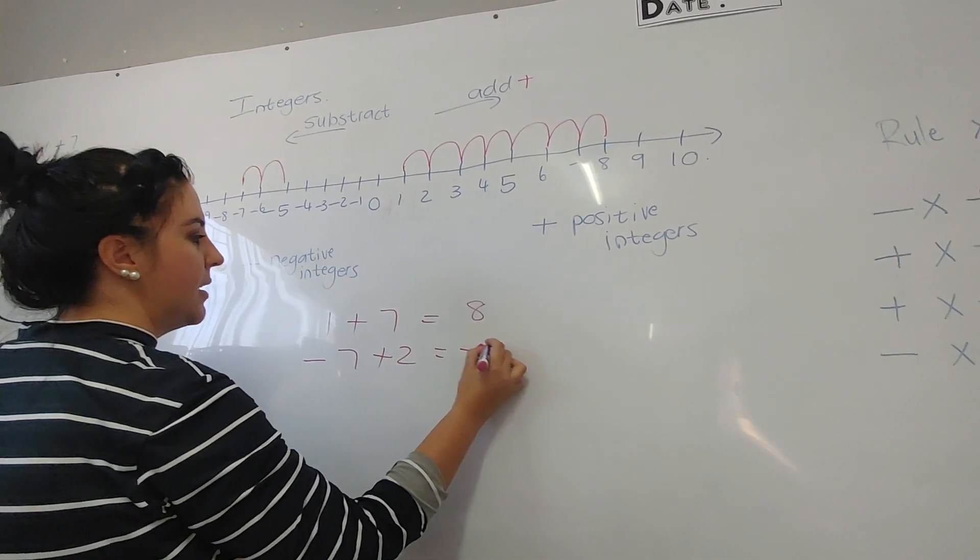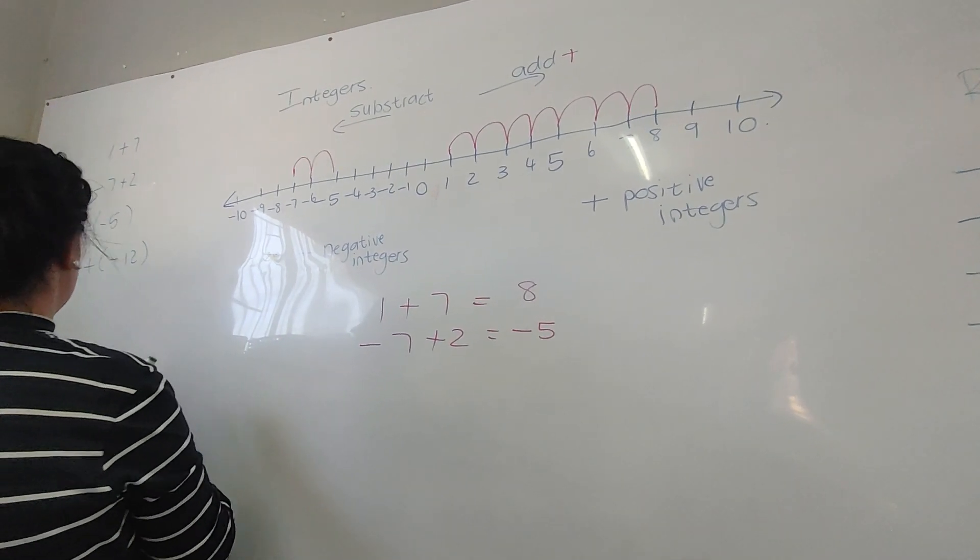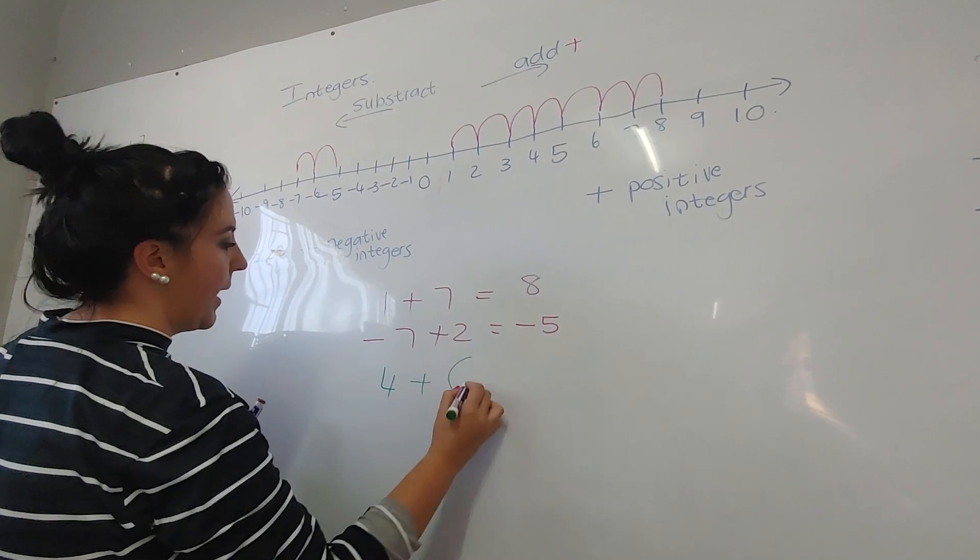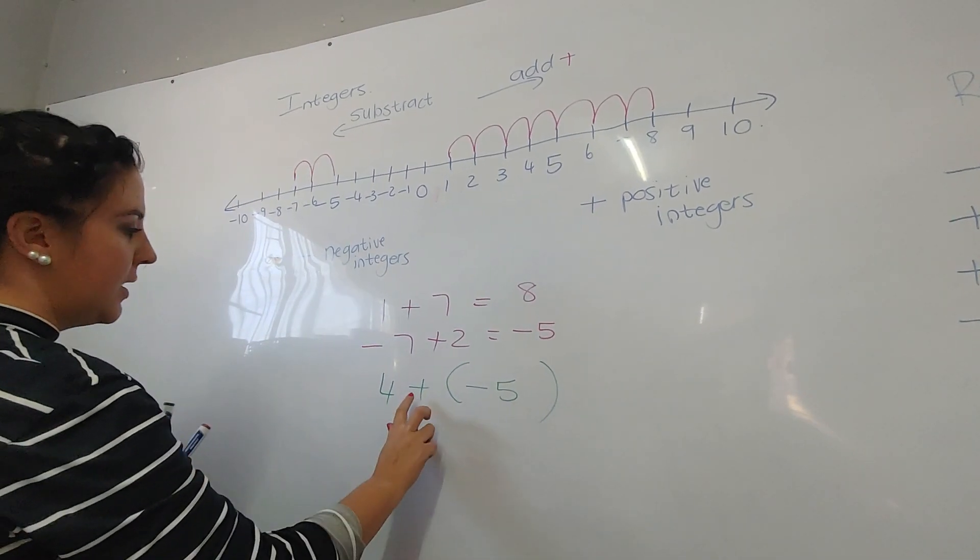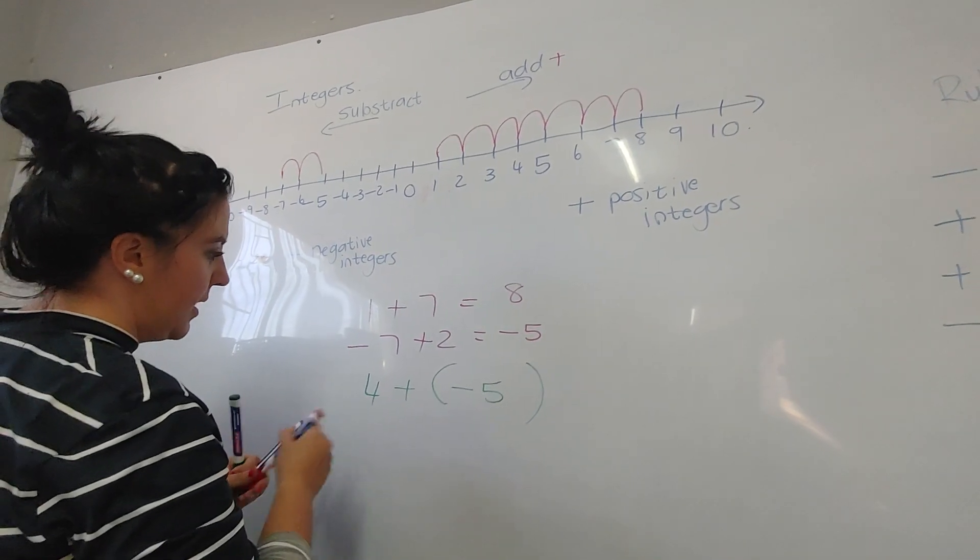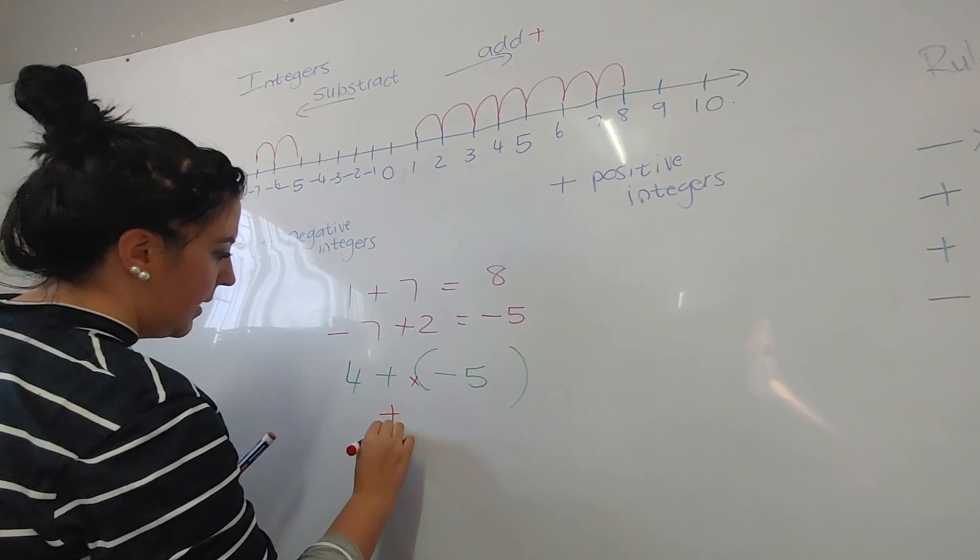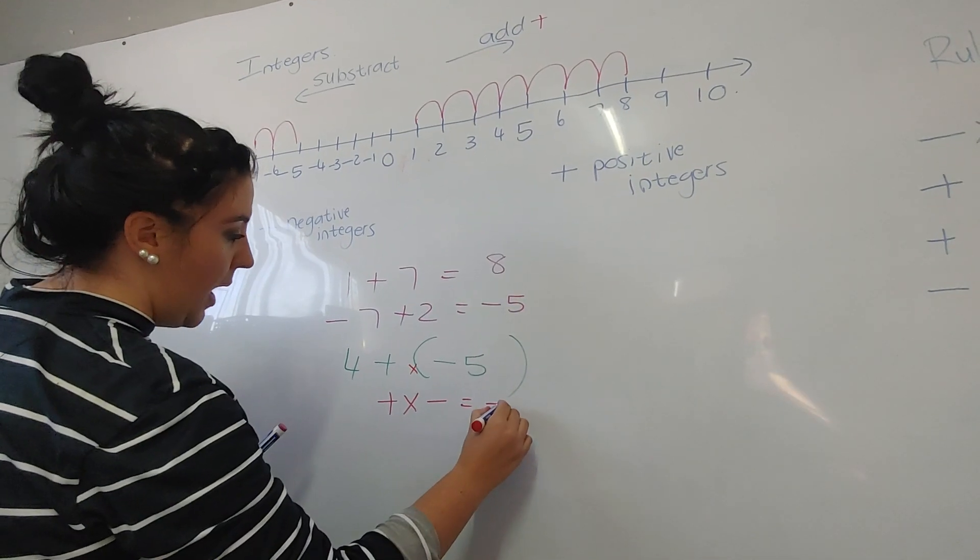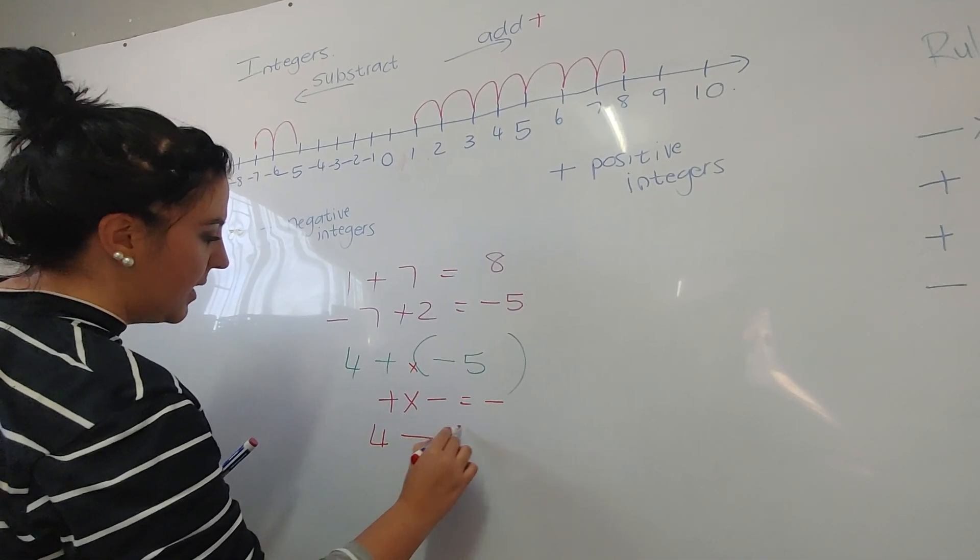Now we're going to do a sum here: 4 + (-5). So the moment when you see a plus, you know that this bracket needs times. Plus times a minus, we've learned that it's going to be a minus. So this is how it's going to look like: 4 - 5.